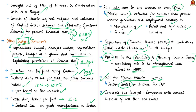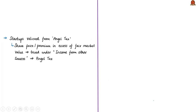Another budget announcement: the corporate tax rate has been lowered for companies with an annual turnover of less than ₹400 crore. The government has expressed support through reduction in tax for such firms to aid their growth. The news article also says that startups have been relieved from angel tax.